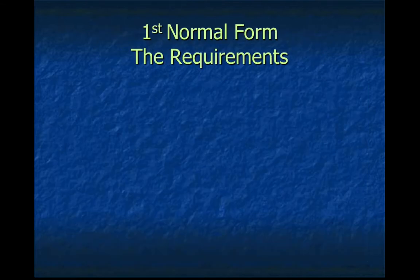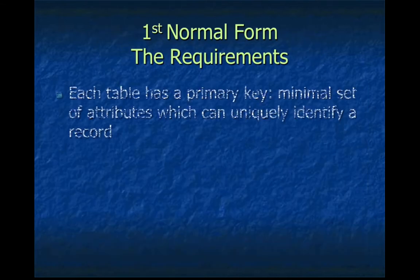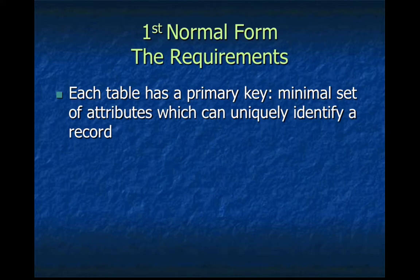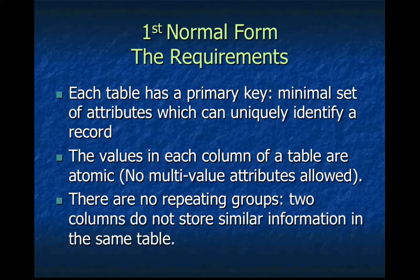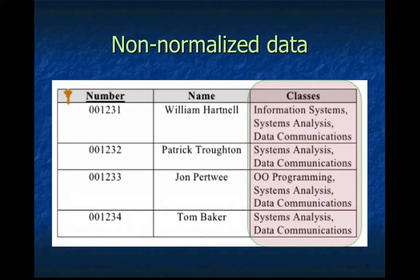This brings us to the first rule, which we'll call the first normal form. The rule here is that each table has a primary key and a minimal number of attributes in that table which can define a record. You cannot put more than one item inside a field — you can't separate items by commas. That's a bad design. We would call this an atomic piece of data — you don't split it. And there's no repeating of groups either, so you don't have two columns that save the same information.